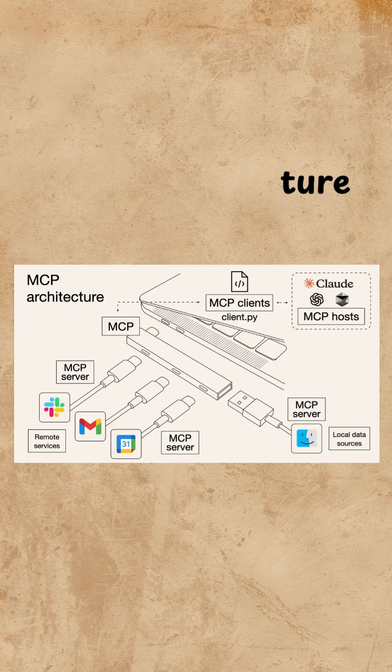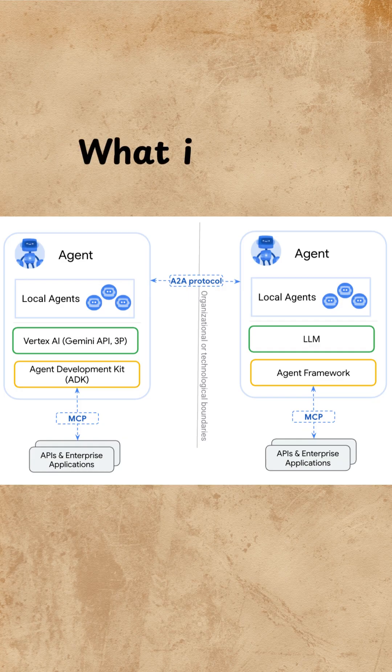If we discuss what exactly A2A is, agent-to-agent is an interaction between two agents. For example, you have a Google agent and you have a Cloud agent — both interact with each other. This is termed as A2A.